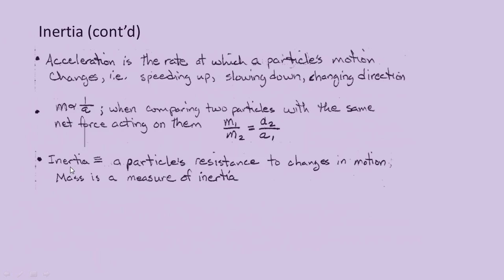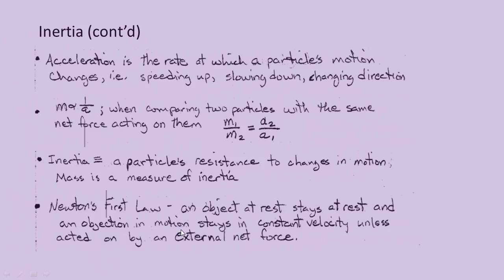This leads us to our definition of inertia: it's a particle's resistance to changes in motion. Because of this relationship, mass is a measure of inertia. If an object has more inertia, it's going to be more resistant to changing motion, which means it's going to have a lower acceleration. An increase in mass also means a lowering of acceleration, or a lowering of the rate at which motion changes — that's why mass is a good measure of inertia. This leads us to Newton's first law: an object at rest stays at rest, and an object in motion stays in constant velocity, unless acted on by an external net force.